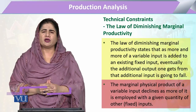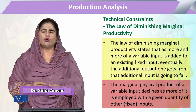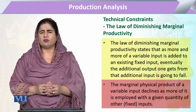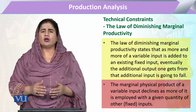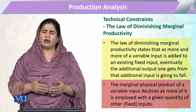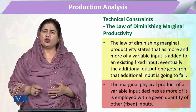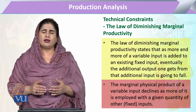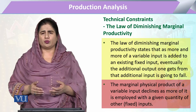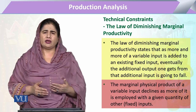The marginal physical productivity is the rate of change in the total production with respect to one input, or the last unit of the input. The law of diminishing marginal productivity tells us that when we utilize more and more of one input, there will gradually come a point where this one additional unit of input will not add to the total output; rather, it may cause a decline in the total output.